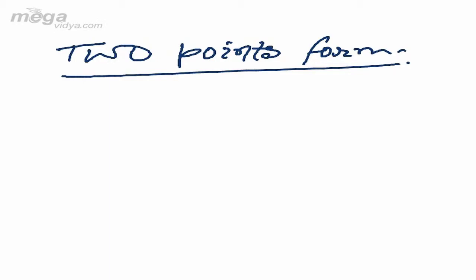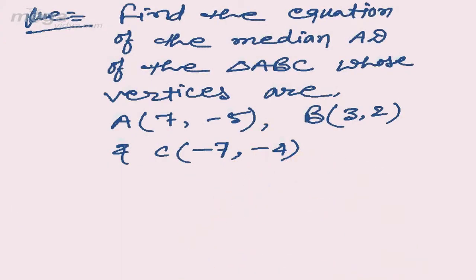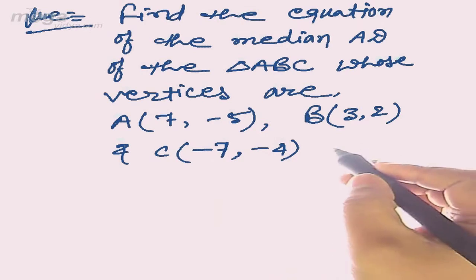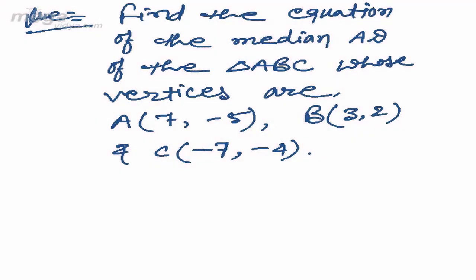I'm taking some questions based on the two-points form and the intercepts form. First, the two-points form question: find the equation of the median AD of triangle ABC whose vertices are A(7, -5), B(3, 2), and C(-7, -4).